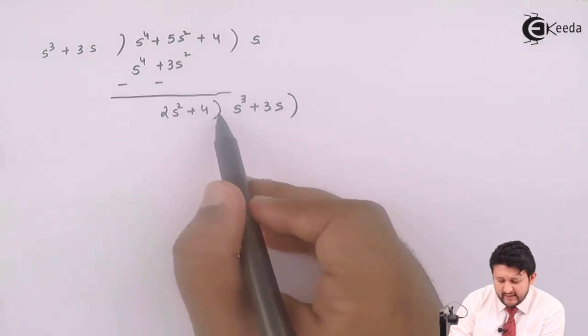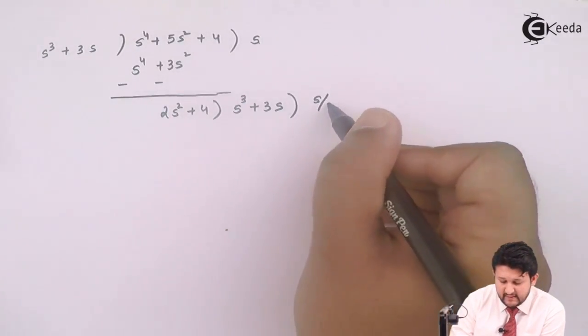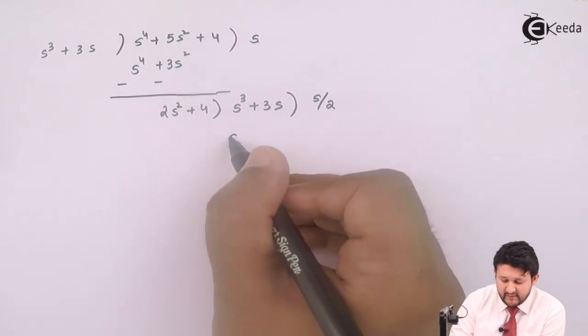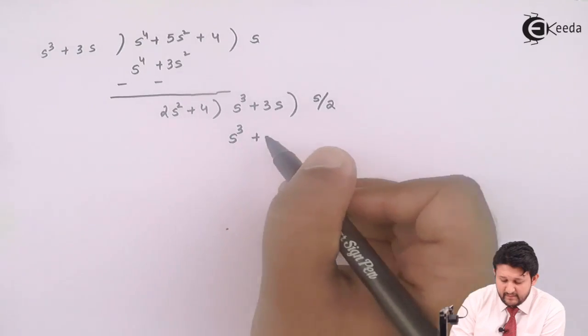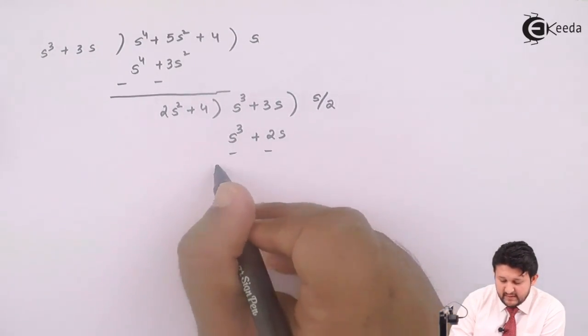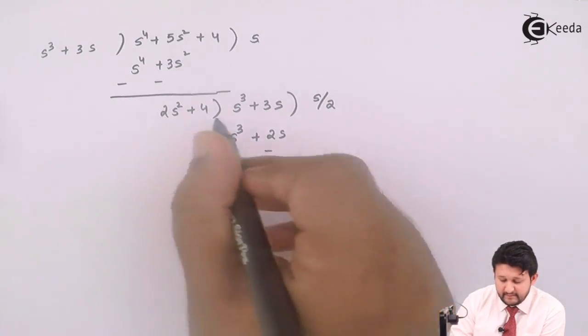The highest term, one s squared, divided by the highest term over here, two s squared. The term which you'll get is s divided by two. Multiply this with this. The term which you'll get is s squared plus three s. Take the difference. Shift.